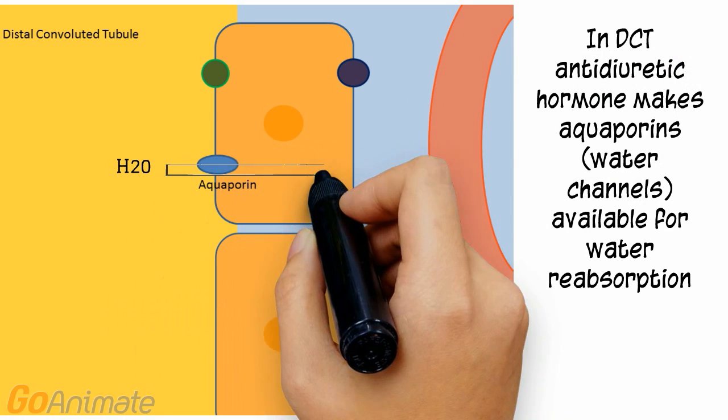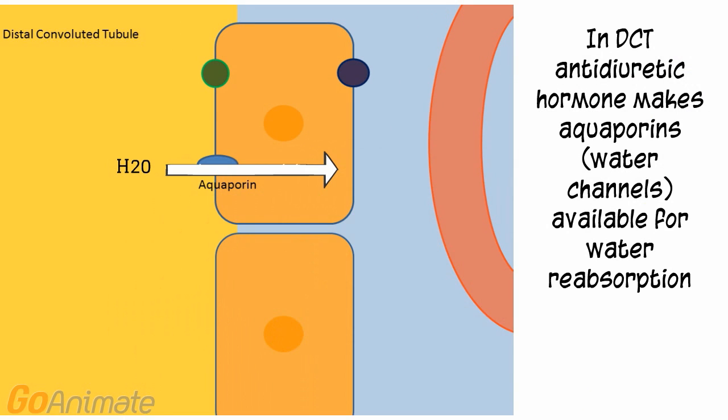In the distal convoluted tubule, anti-diuretic hormone makes aquaporins, or water channels, available for water reabsorption.